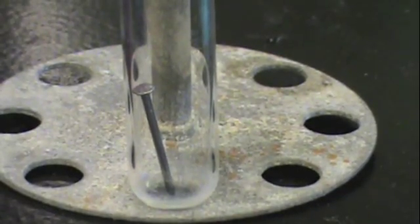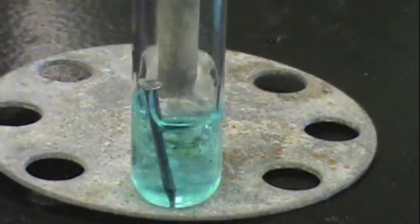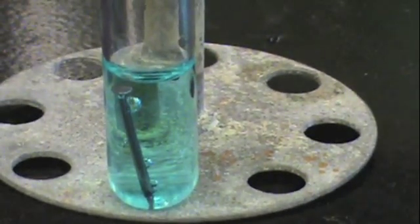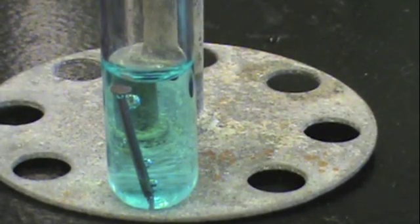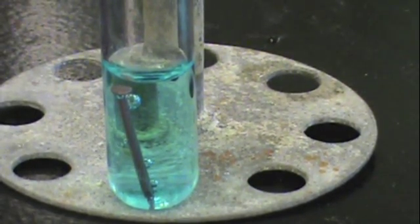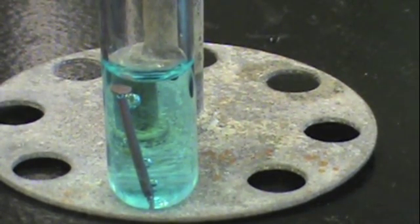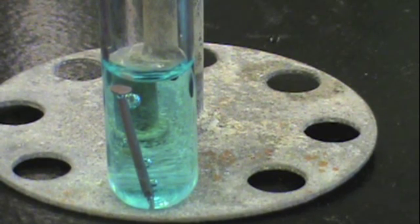The next reaction is that of iron with copper sulfate. Within a few seconds, you can see that the nail begins to turn reddish-brown. This is not the formation of rust, but rather the depositing of copper metal on the nail. This means that there is definitely a reaction happening between copper and iron.